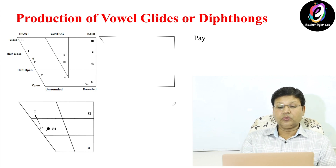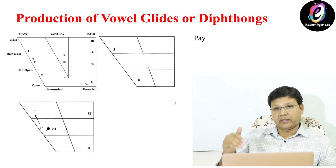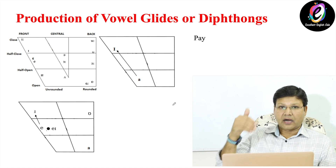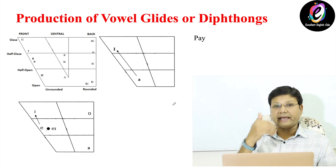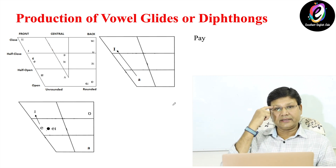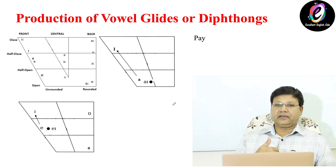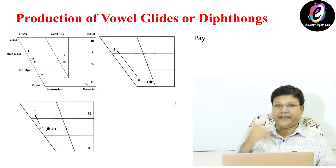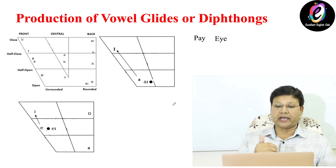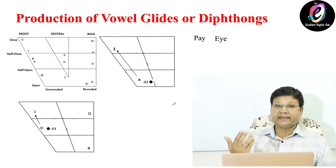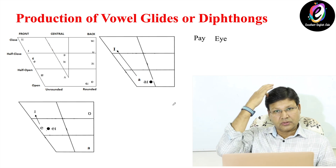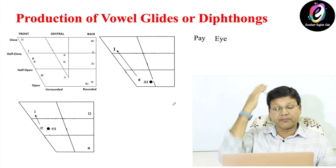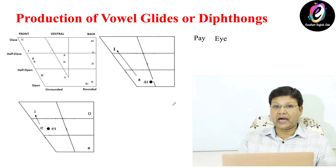The second diphthong is A-I. This glides from A to I — for example, the word 'I,' as in 'I am going,' and also 'my' and 'toy.' These words are produced with the help of this diphthong, A-I.